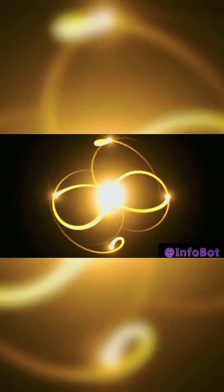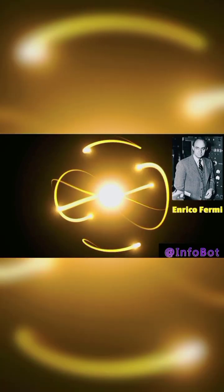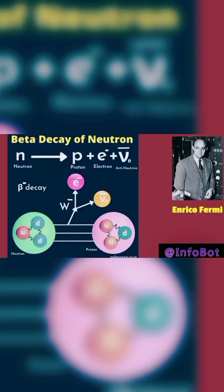In the 1930s, physicist Enrico Fermi proposed the theory of beta decay, which helped to explain how certain subatomic particles change into other particles.